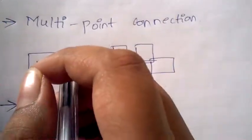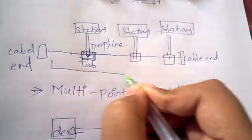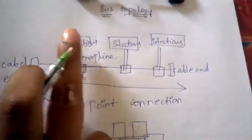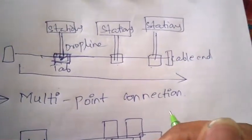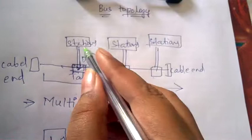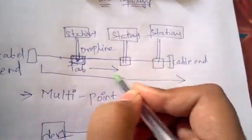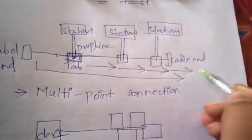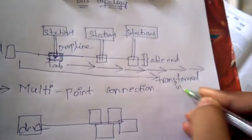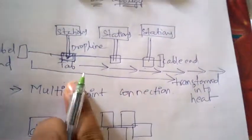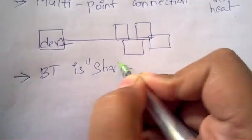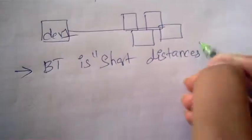As information transfers from one cable end to another, or from one device to another, the clarity and quality will reduce because the energy is transformed into heat. For example, as the distance increases, the information signal degrades. So bus topology is used mostly for short distances only.